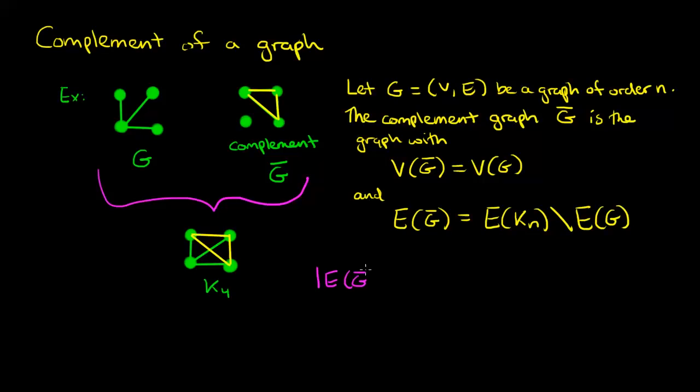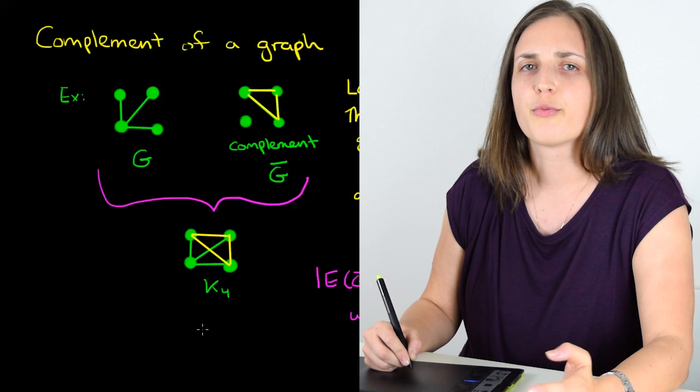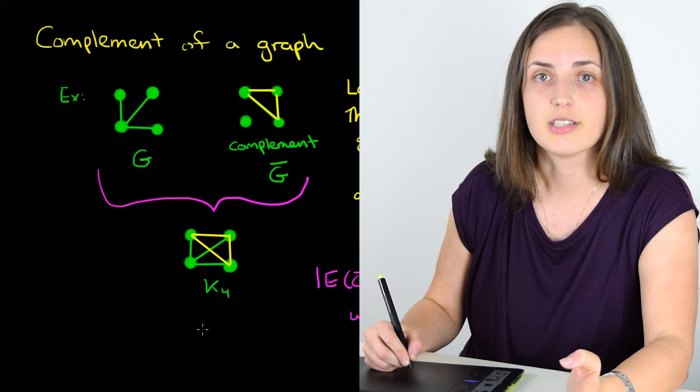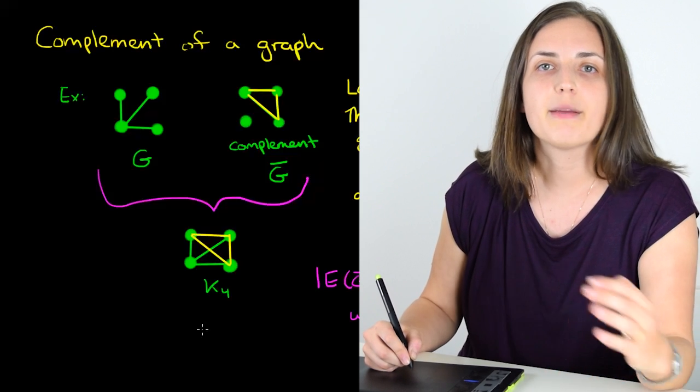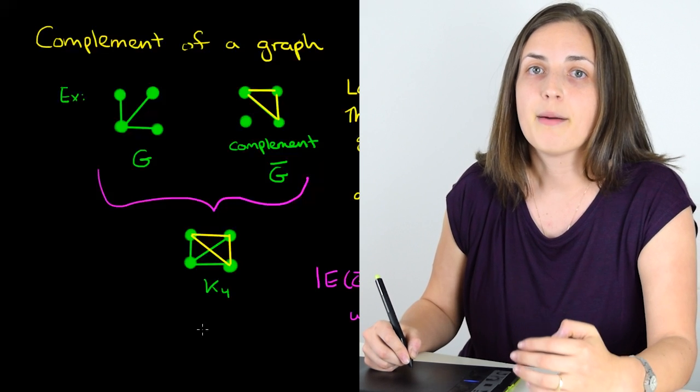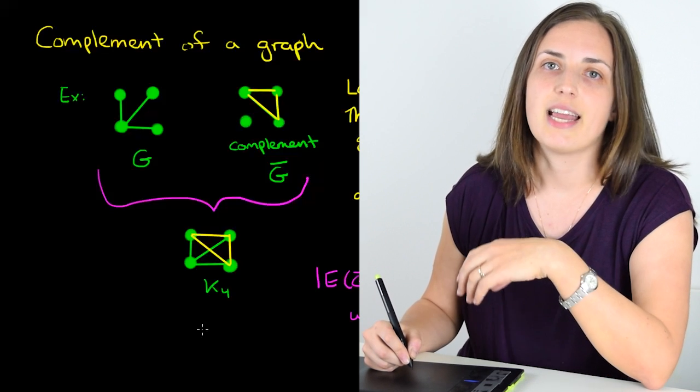This means that the number of edges of the complement graph is equal to n choose 2 minus m, where m is the size of the edge set of the original graph. Remember the reason why a complete graph has n choose 2 edges is because every pair of vertices need to be adjacent in a complete graph and the number of such pairs is n choose 2.